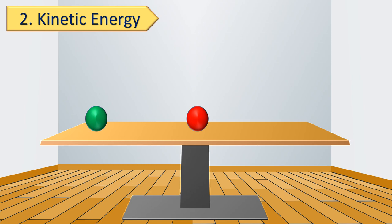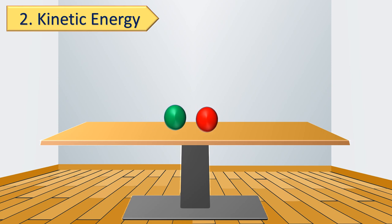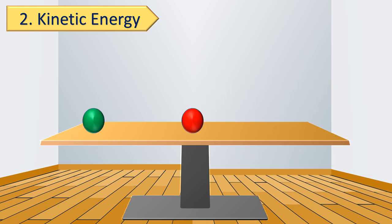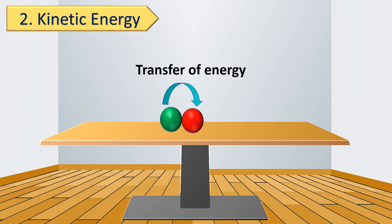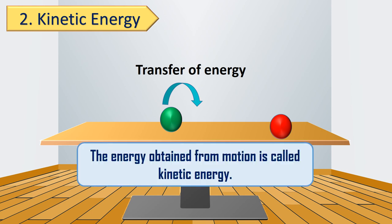Suppose two balls, red and green, are placed on the table. The red ball is at the center of the table and the green ball is at one side. What happens if we push the green ball so that it hits the red ball? When we apply a pushing force on the green ball, we give energy to it and set it in motion. When the green ball hits the red ball, it transfers its energy to the red ball. As a result, the red ball also sets in motion. From this we can define kinetic energy: the energy obtained from motion is called kinetic energy.